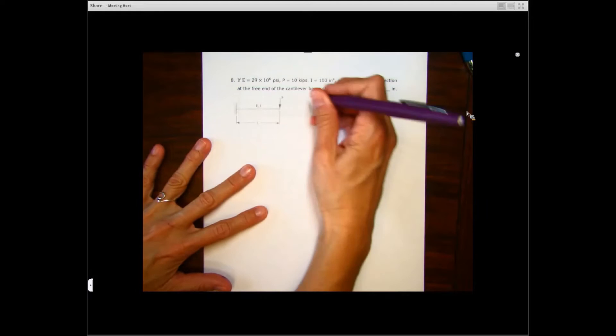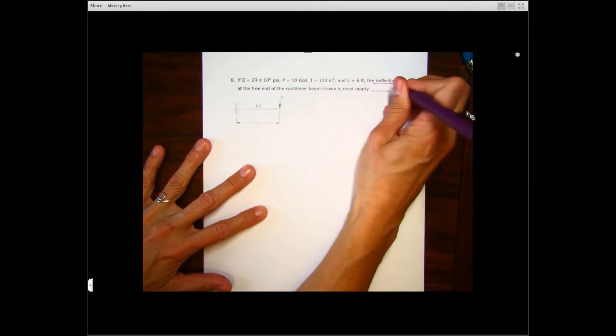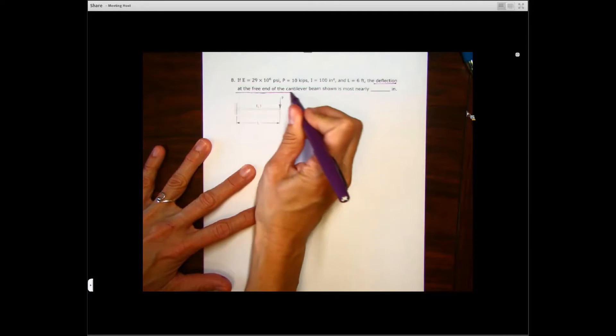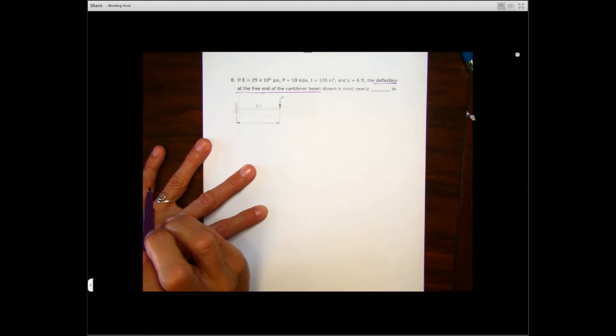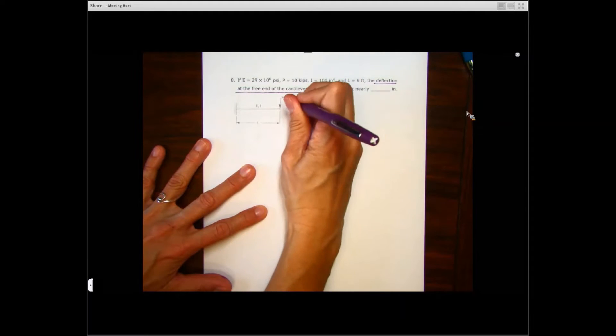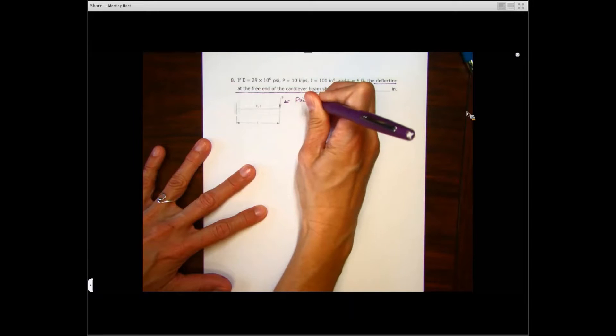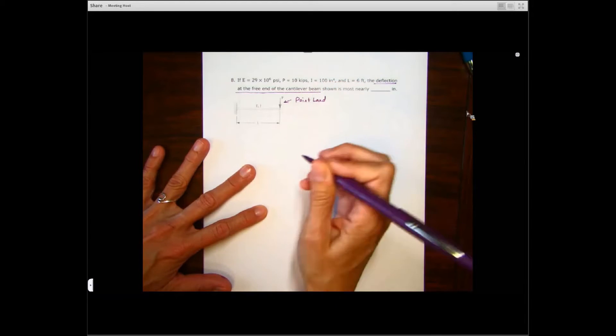So we're away from trusses now, we're on to beams. What this is asking us for is deflection at the free end of a cantilever beam. And when we see that, that's a point load, right? We recognize that as a point load.